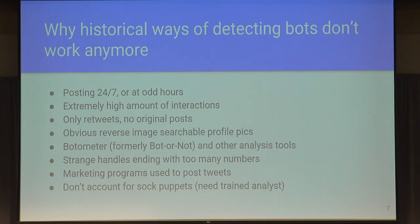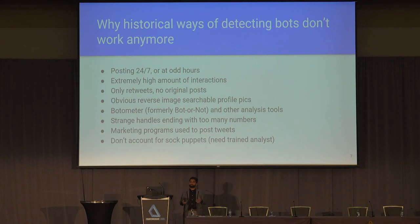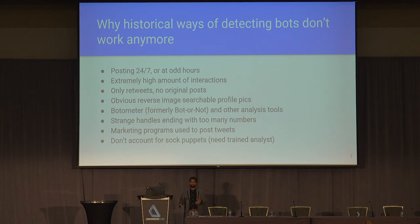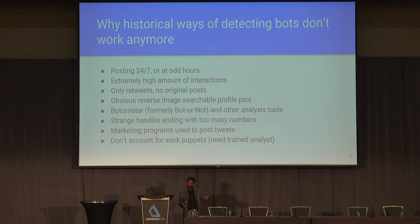In general, people that run influence operations constantly change their TTPs — techniques, tactics, and procedures — because there's always a catch-up game between the people running these disinformation campaigns and the people combating them, like those who write reports and work on uncovering what's happening. Some of the historical ways we've been able to detect bots include these characteristics.